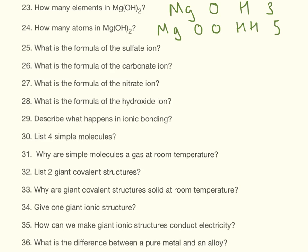What is the formula of sulphate ion? This is on your periodic table — you don't have to remember this, but it's really important to be familiar with these. Sulphate is SO4 2-, carbonate is CO3 2-, nitrate is NO3-, hydroxide is OH-. So many people come to the exam and don't realise these formulas are on the formula sheet.